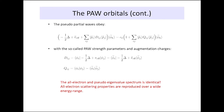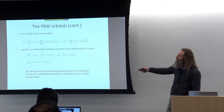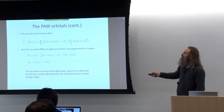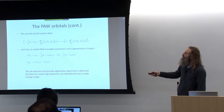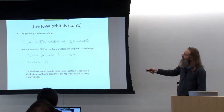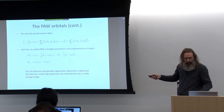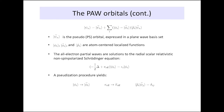These are the so-called PAW strength parameters and augmentation charges. The augmentation charges account for the fact that the norm carried by the pseudized partial waves is not necessarily equal to the norm of the all-electron partial waves. The strength parameters are expectation values of the difference between the all-electron partial wave basis and the pseudo partial wave basis. This equation yields the same eigenvalue spectrum as the all-electron problem.